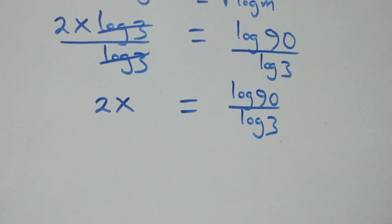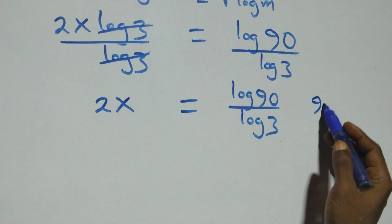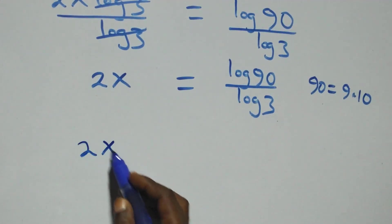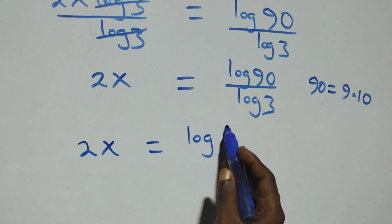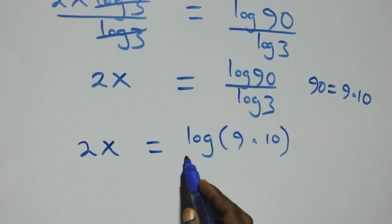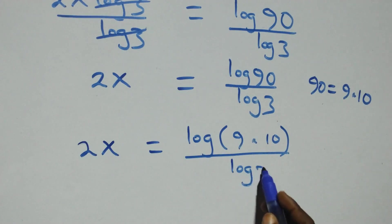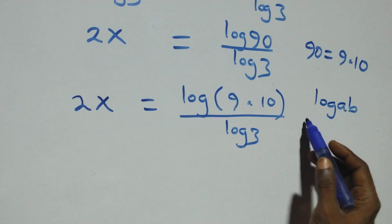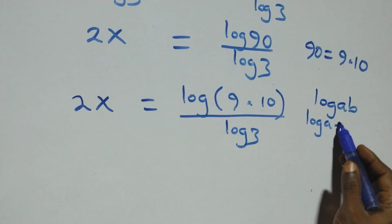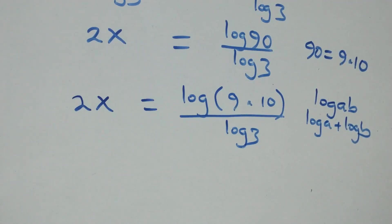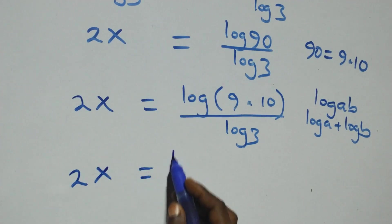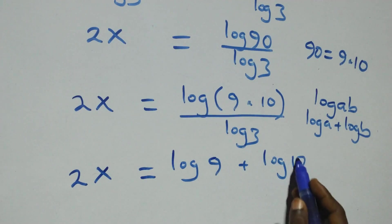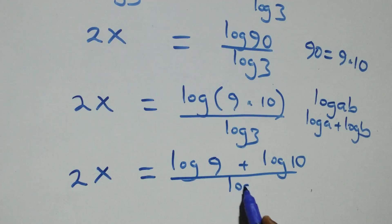We can rewrite 90 as 9 times 10, which implies 2x equals log of 9 times 10, all over log 3. This follows from the product rule of logarithms: log of a times b can be expressed as log a plus log b. So this becomes 2x equals log 9 plus log 10, all over log 3.